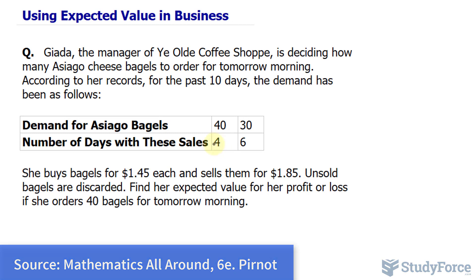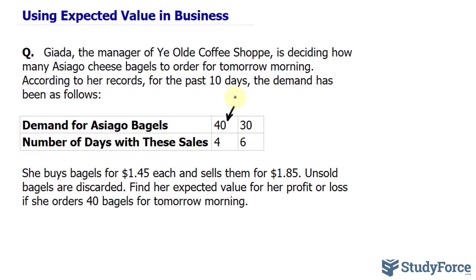In 4 out of the 10 days, 40 people demanded this bagel — and we assume that if they demand it, they purchase it. And in 6 out of the 10 days, only 30 people demanded it. So when the demand is 40, the probability of that is 4 out of 10, and when the demand is 30, the probability is 6 out of 10. That will come in handy later on.